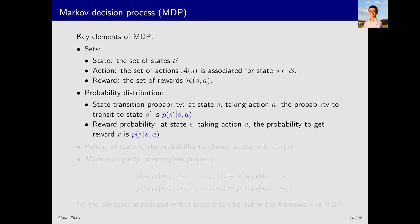What is the second key element of MDP? Probability distribution. The first type is the state transition probability. In state S and taking action A, the probability to transit to state S' is this. The second type is the reward probability. In state S and taking action A, the probability to get reward R is this.